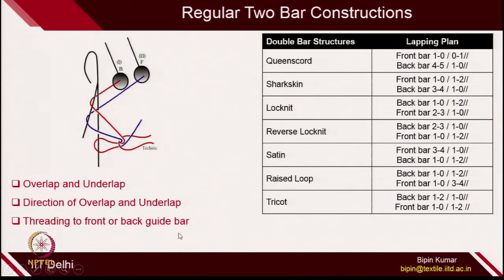The third thing is the threading of the front or back guide bar. Sometimes you thread on the back guide bar and front guide bar, and you can also swap their positioning. For example, in satin, the front bar has 3, 4, 1, 0 and the back bar is 1, 0, 1, 2 lapping plan. But in shark skin, the front bar has 1, 0, 1, 2 and the back bar has 3, 4, 1, 0. So the threading has just been interchanged, and because of that, you get different types of properties.